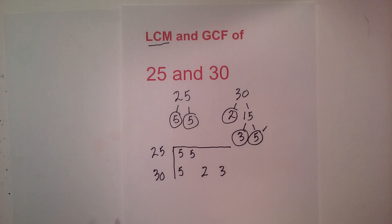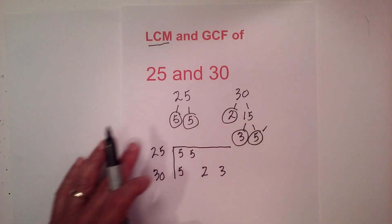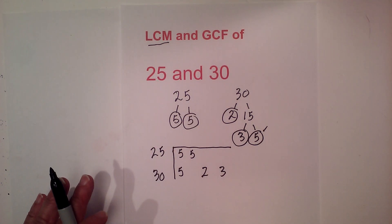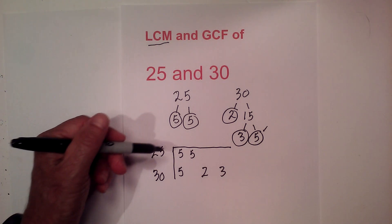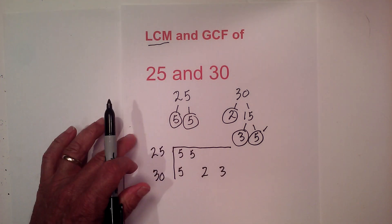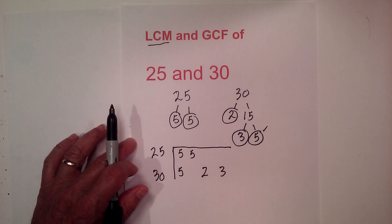Now the LCM is the lowest common multiple, so it's the number that 25 and 30 will both divide into evenly and it's the least number. So what I do is I multiply all these prime numbers together. However, I follow this rule.